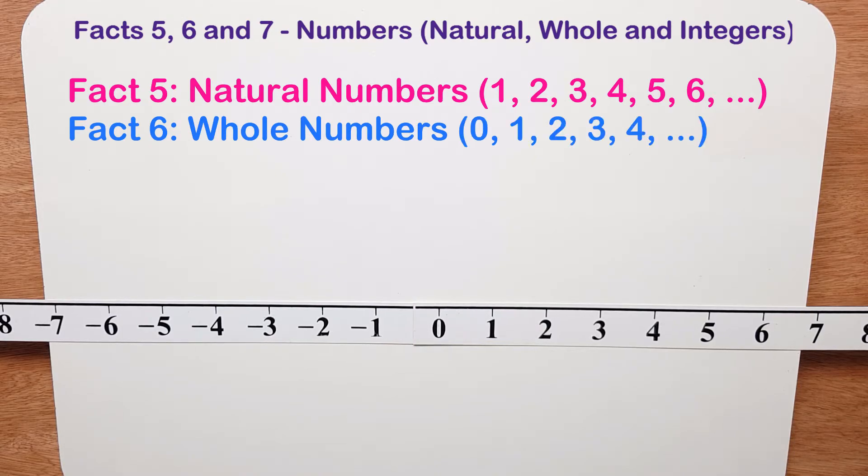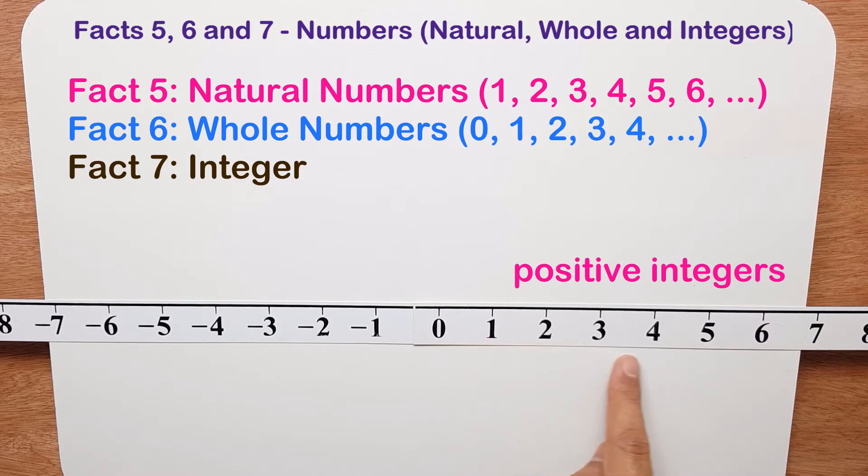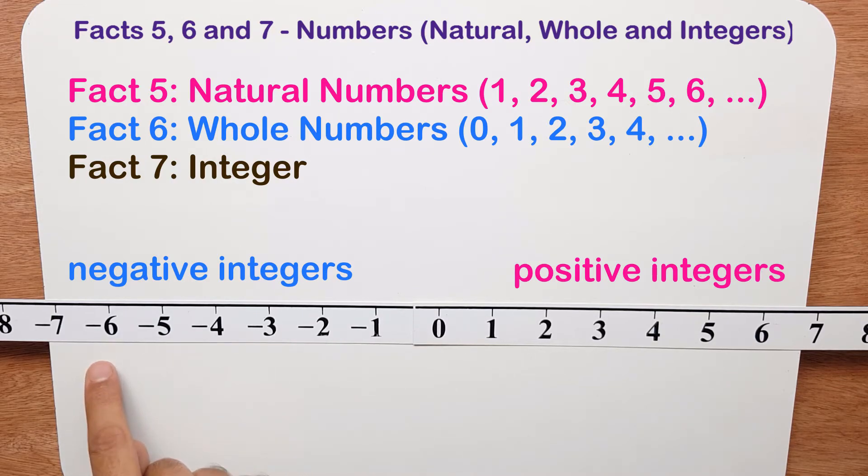Now finally we've got the word integer. It's a very important word. It comes up a lot in your maths. An integer is simply any number on this number line. So it can be positive on this side, it can be negative on this side, or it can be 0.